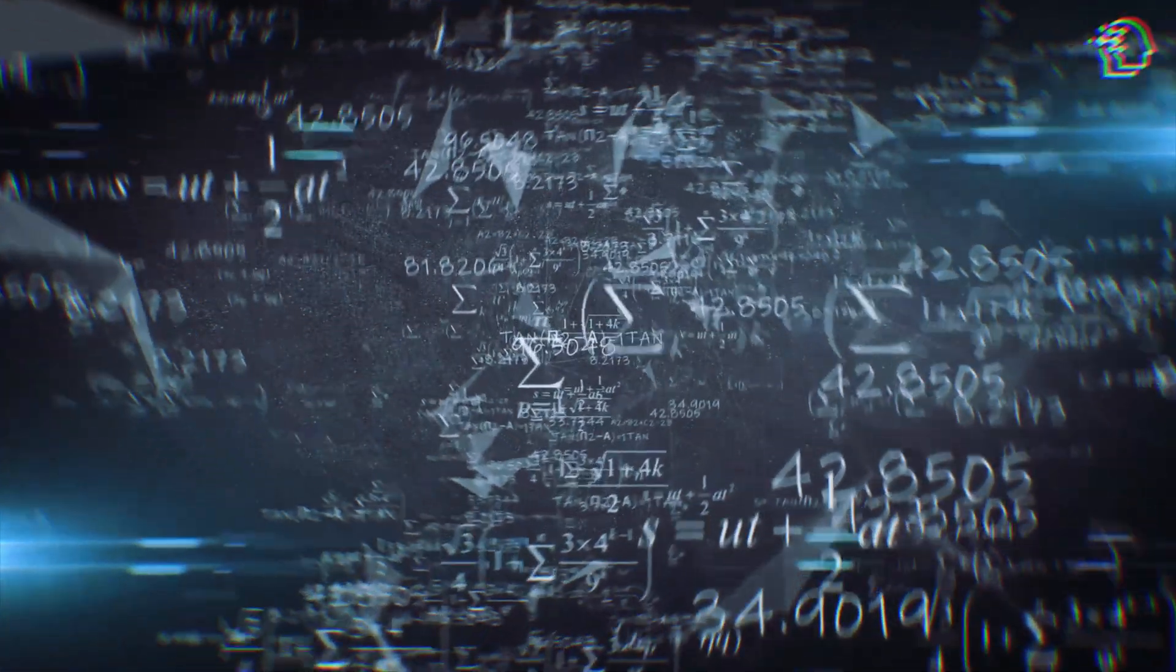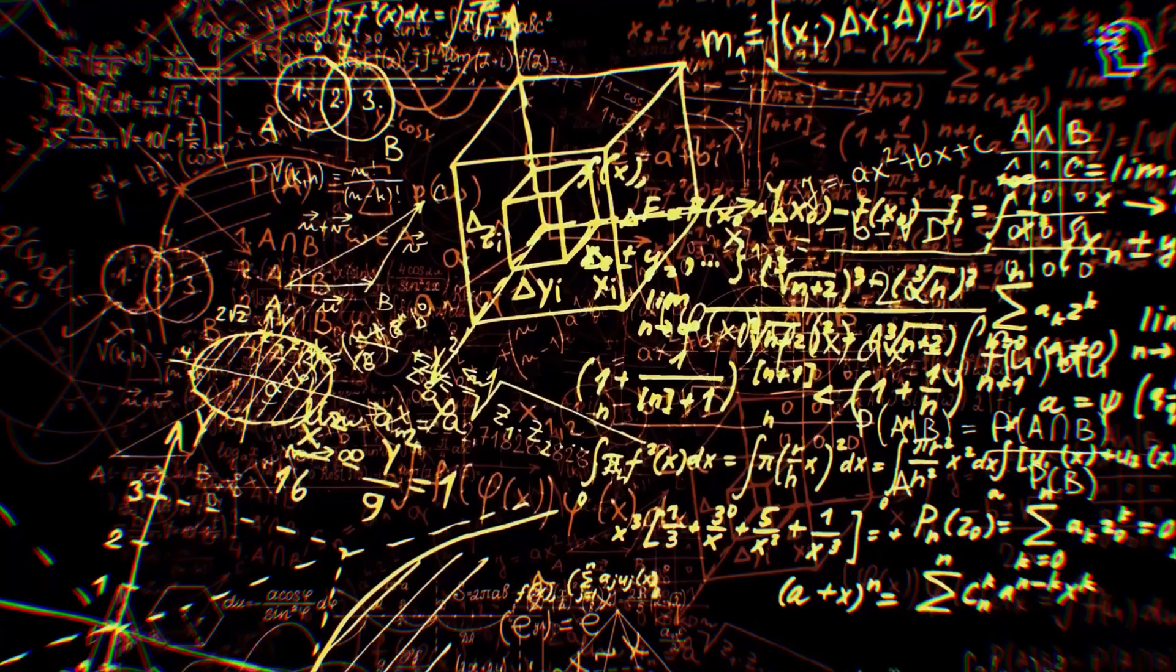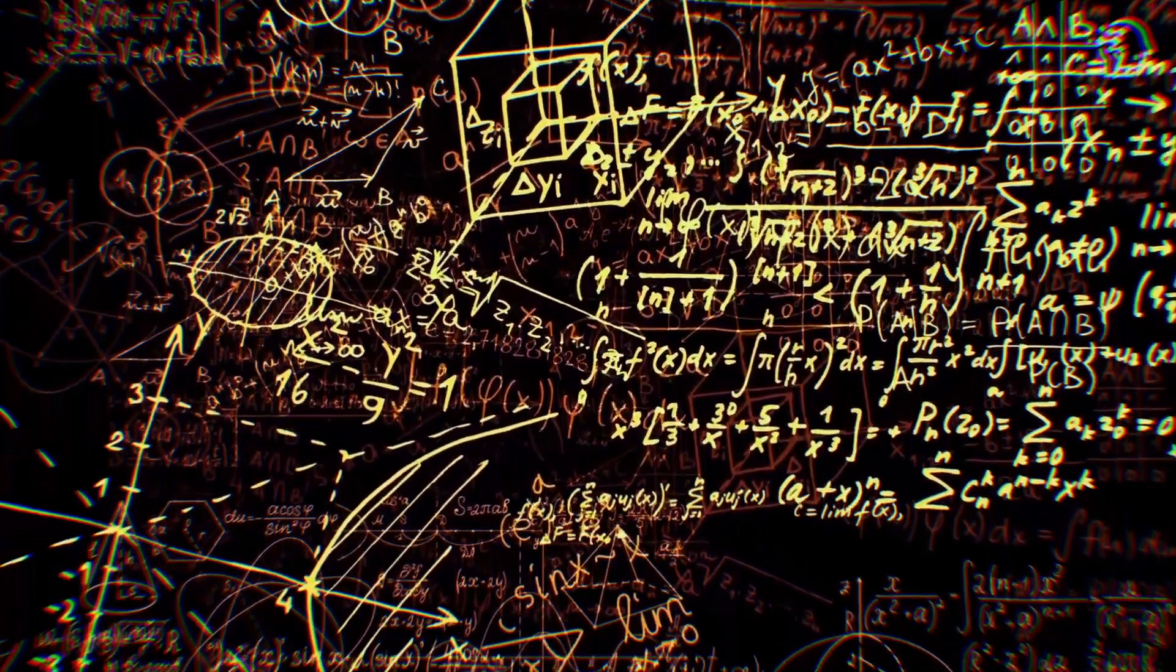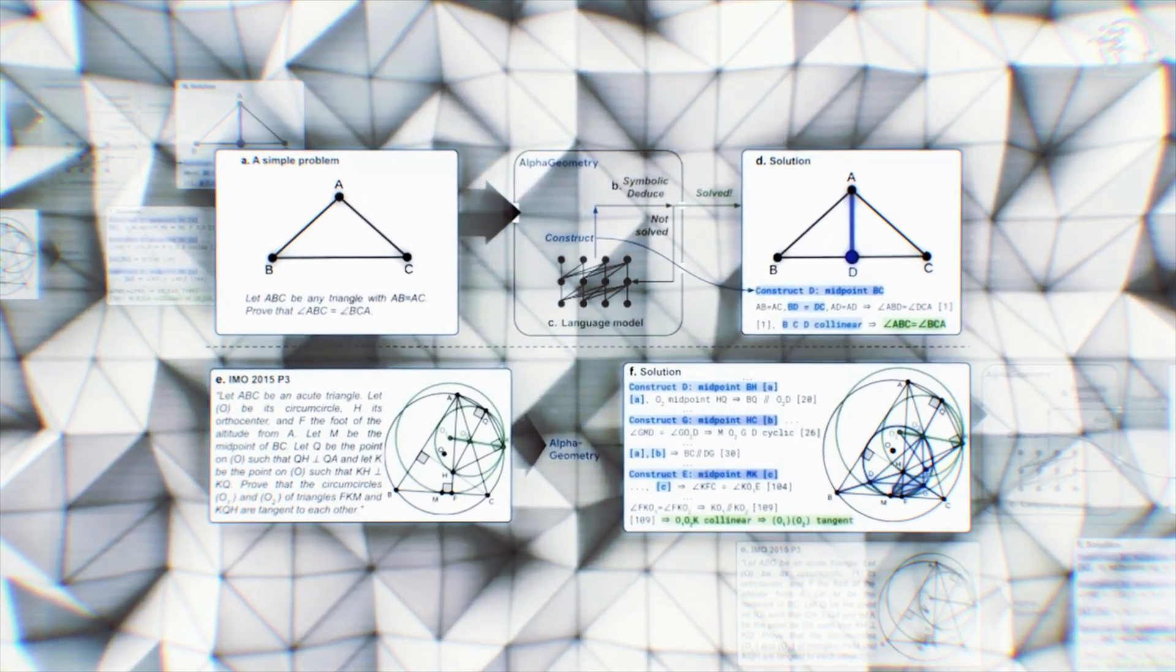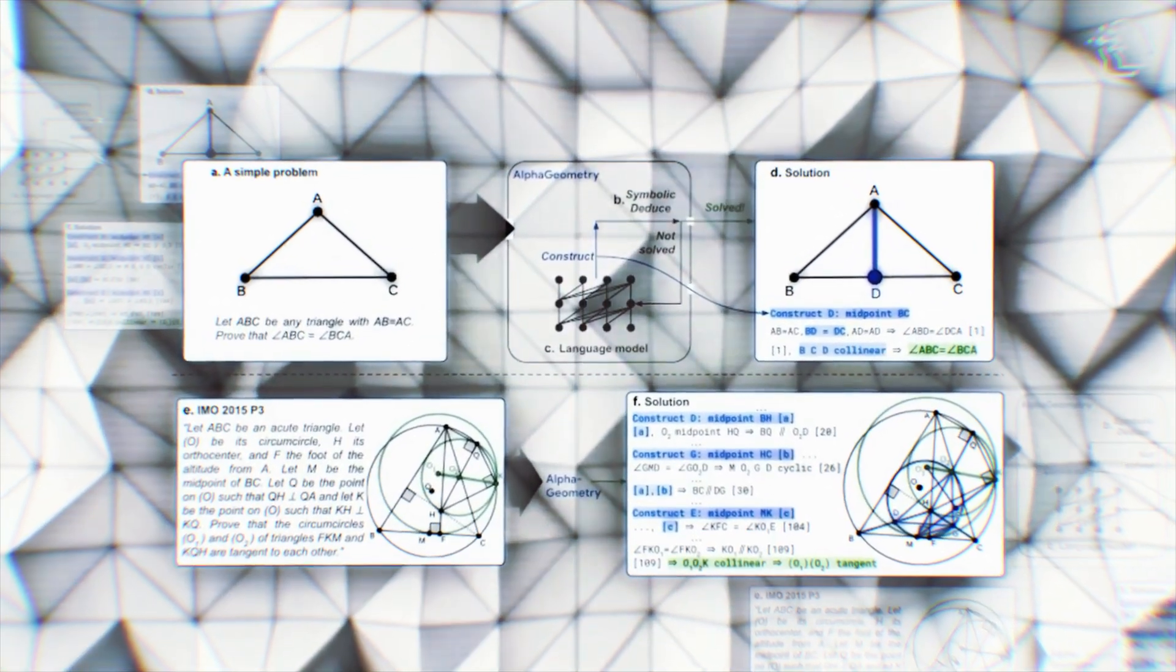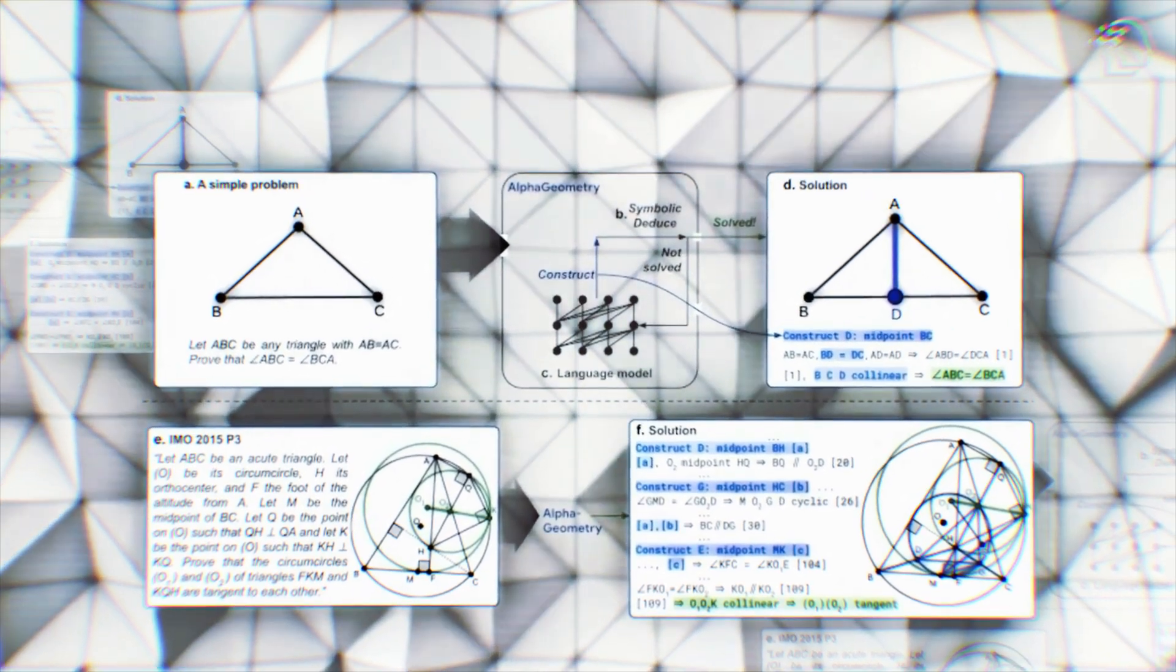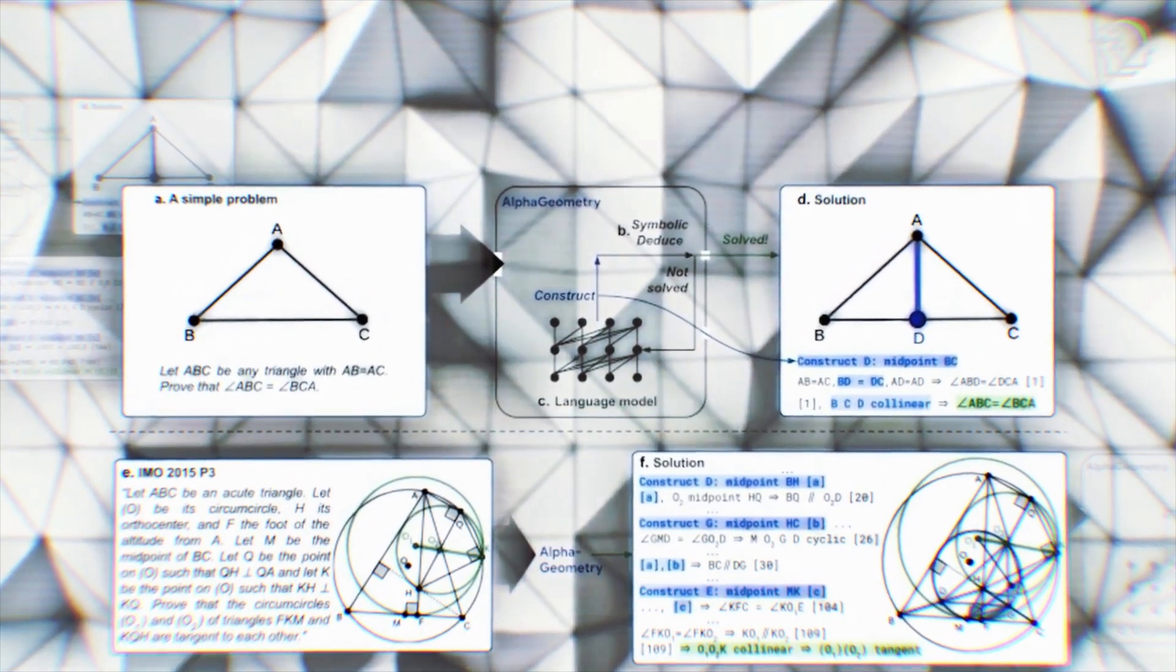Now, let's talk about the notorious IMO-level geometry problems. They're not just tough. They're brain benders with intricate diagrams and nuanced geometric relationships. Here's where AlphaGeometry's neural language model shines, interpreting these diagrams and formulating solutions with an intuition that's almost uncanny.